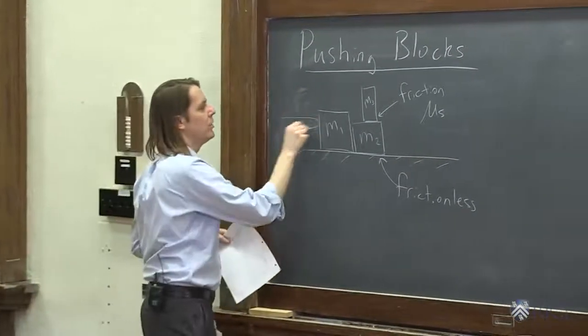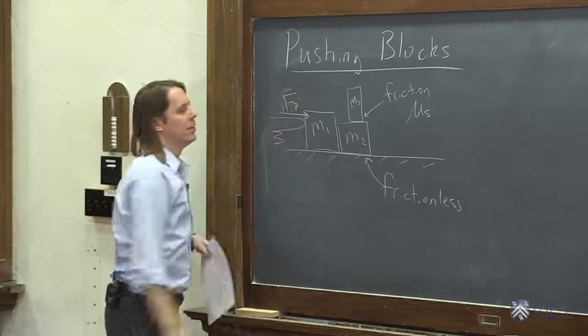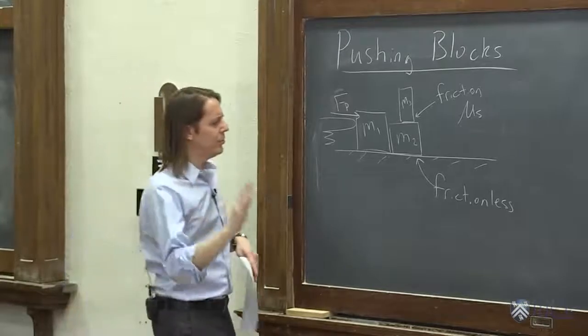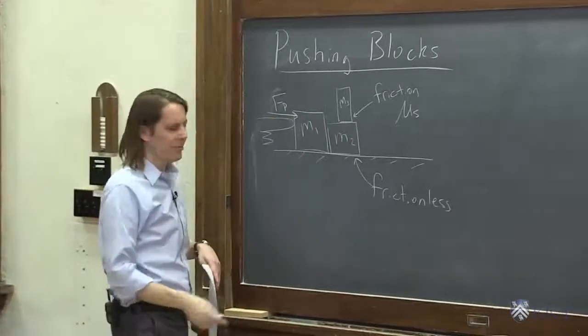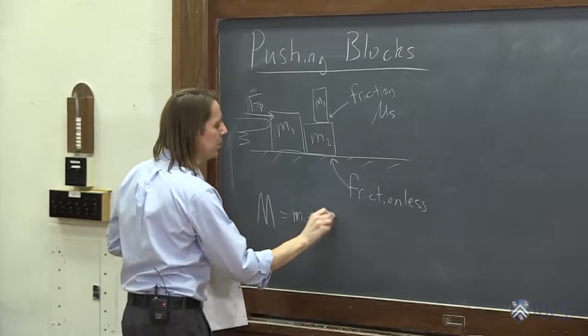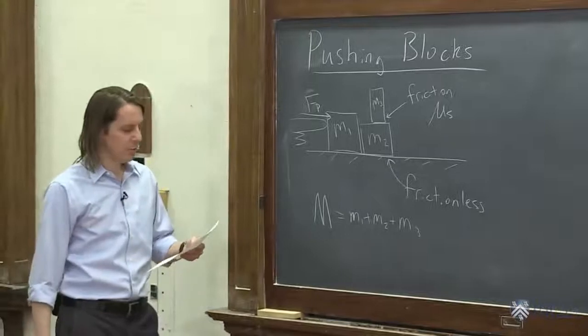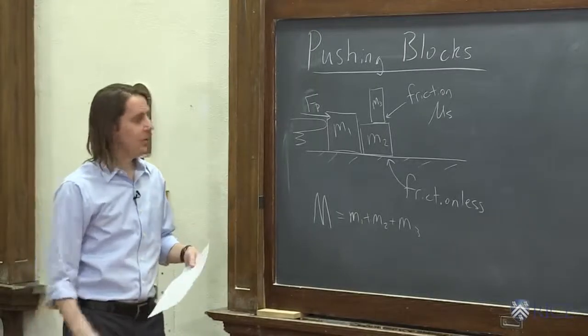And again, we're going to push Fp. And one little substitution. We're going to end up adding these masses up a lot. So let's say big M equals M1 plus M2 plus M3. You often start with getting the total acceleration. And let's go ahead and do that.